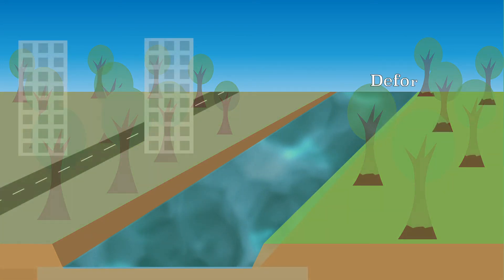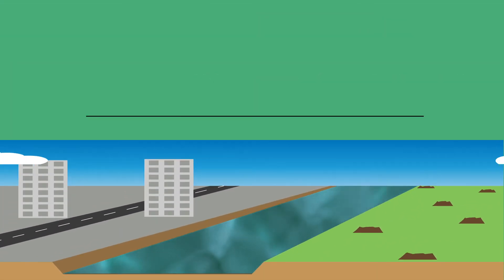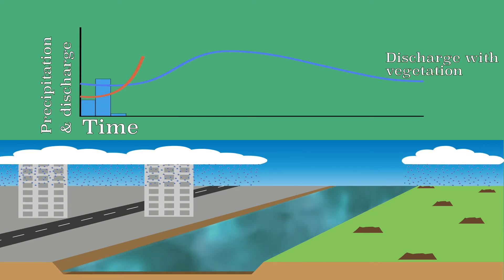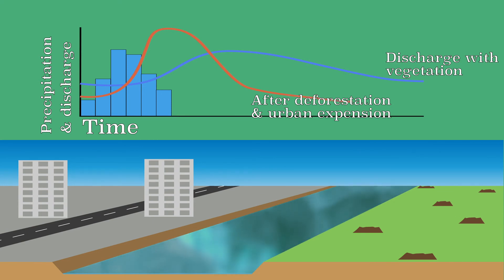The surface in the basin can also change. For example, deforestation and urban expansion ensure that the precipitation is not retained but flows directly to the river. Because the water enters the river much faster than when there is a lot of vegetation in the drainage basin, the lag time is short.